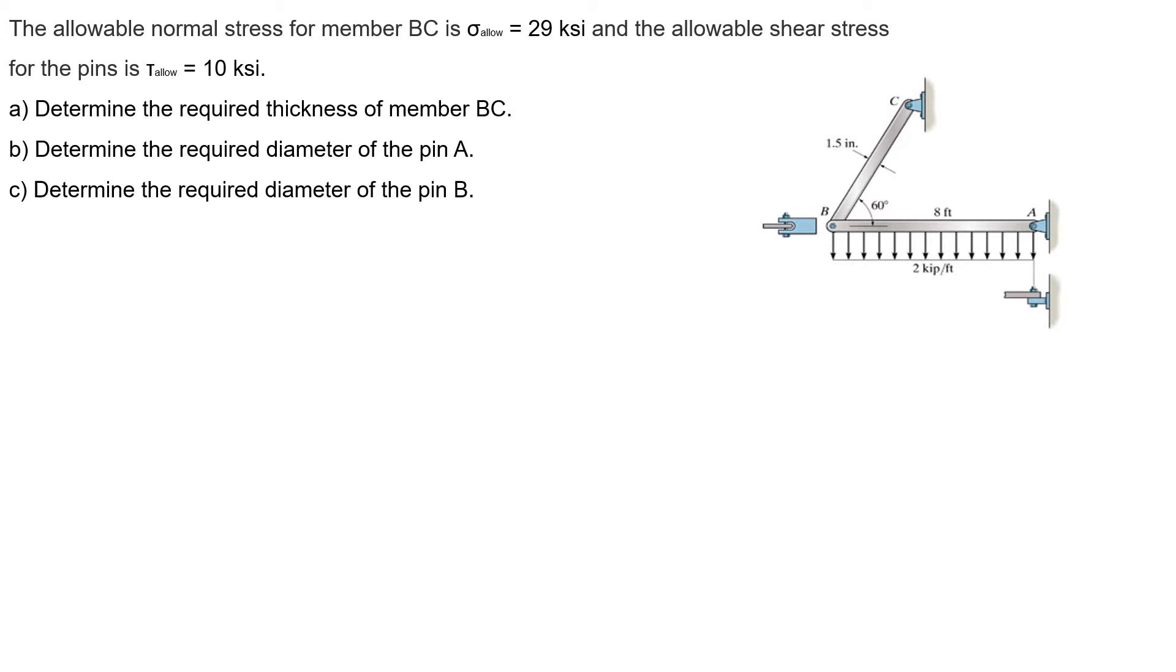I will start with my free body diagram starting at point B and going all the way until point A. For B, I have a force that is 60 degrees. I'm dashing because I will find the components. To find the components, I know in y direction I have TBC times sine of 60, and in x direction I have TBC times cosine of 60. For A, I have AY and here I have AX.